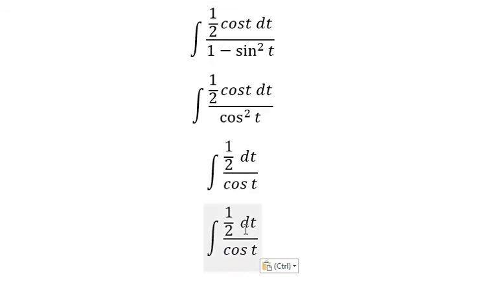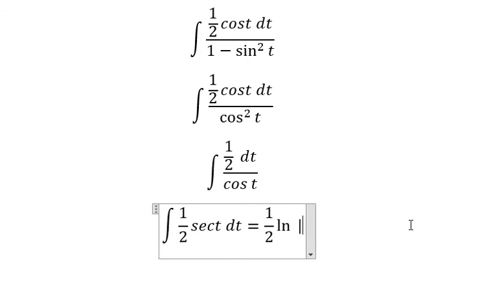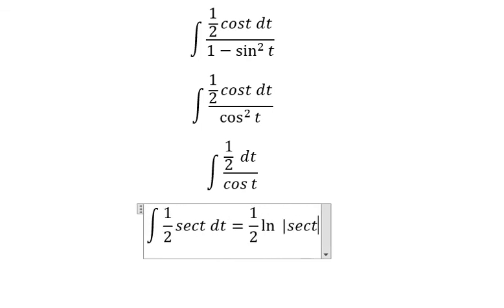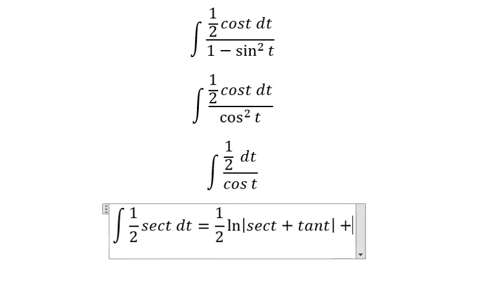This one I can write as 1/2 sec t dt. The integration of sec t gives you ln of the absolute value of sec t plus tan t, and we put C.